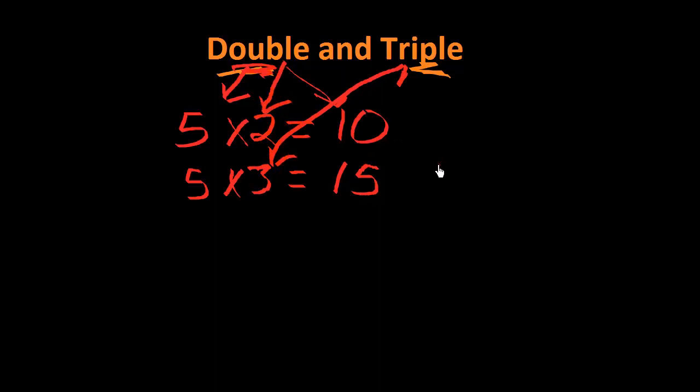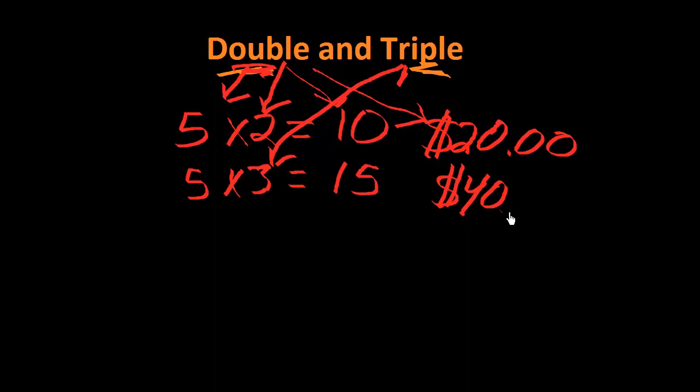We'll do one more example. People will say, double your money. So if you have 20 dollars, and you double your money, then you would have 40 dollars.